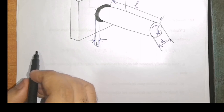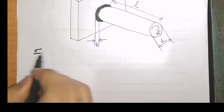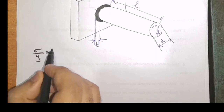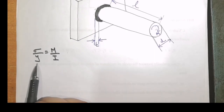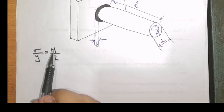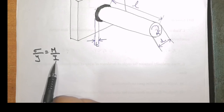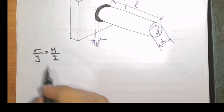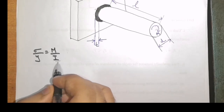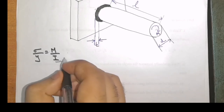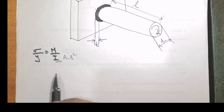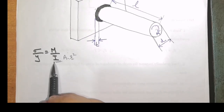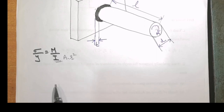From the basic bending equation, we have sigma over y is equal to M by I, where sigma is the bending stress, y is the distance of the outer fiber, M is the moment, and I is the moment of inertia. This I can also be written as area multiplied by R square, since the moment of inertia is the second moment of area.